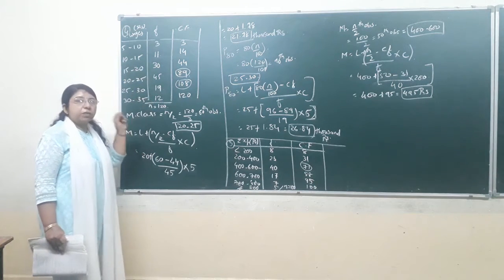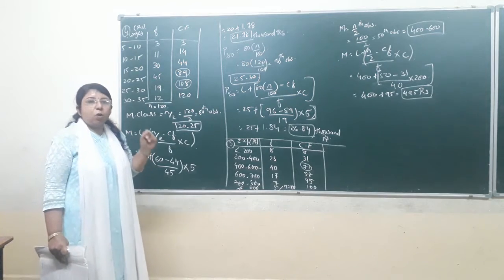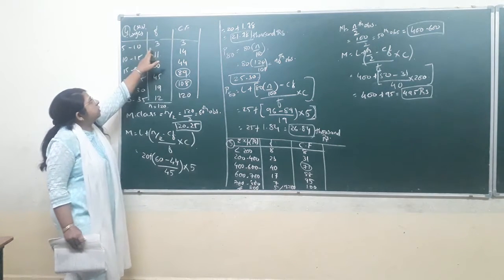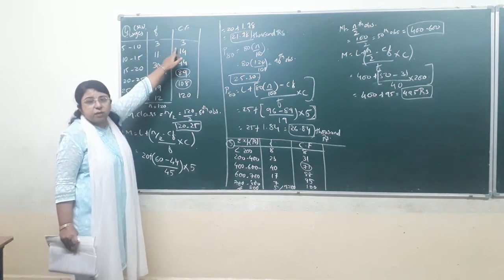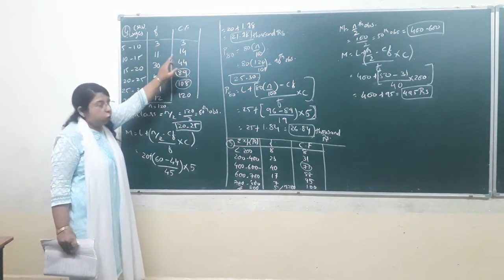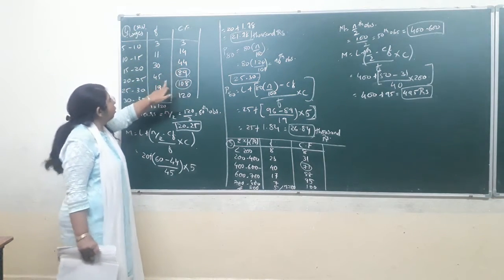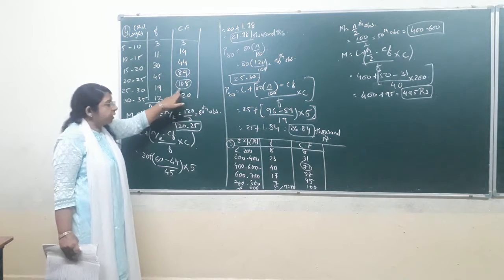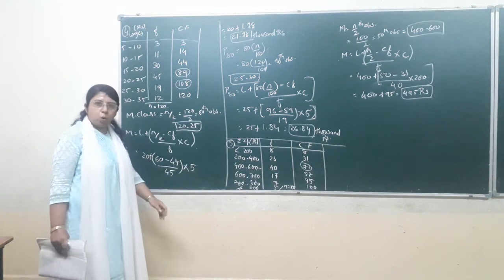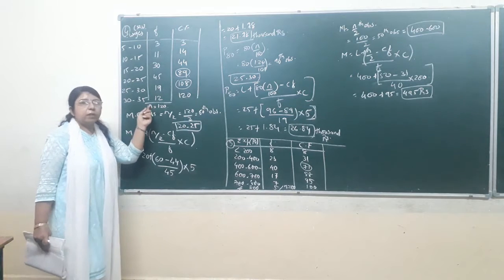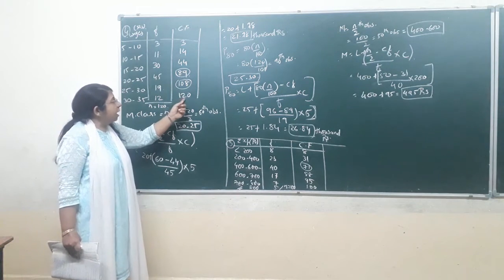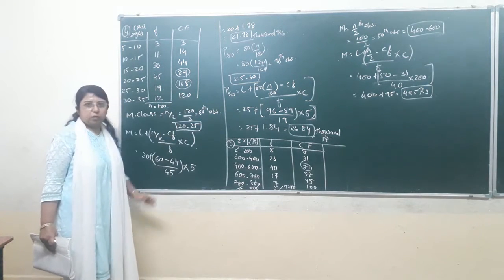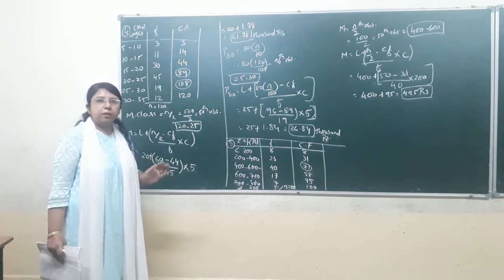After getting the original frequency, we have to find the cumulative frequency, as we always do for median and positional averages. The less-than cumulative frequency starts with 3 as it is, then 3+11=14, 14+30=44, 44+45=89, 89+19=108, and 108+12=120. The total frequency N equals 120, and the last cumulative frequency value is also 120 — so our calculation is correct.